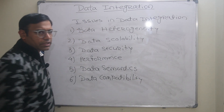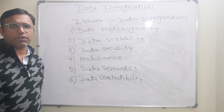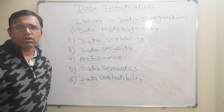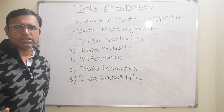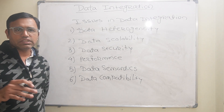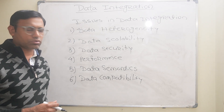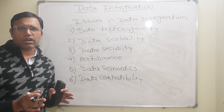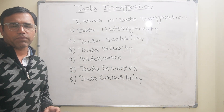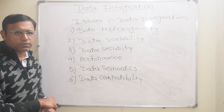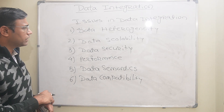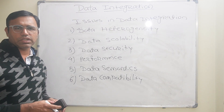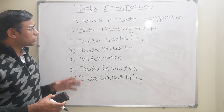The sixth issue is data compatibility. Some data may use HTML format, some can be in CSV format, some can use ASCII code, and some can use EBCDIC code. Since the data is in different formats, combining all this data and converting it into one unique format is again one of the issues in data integration. These are all the issues associated with data integration.